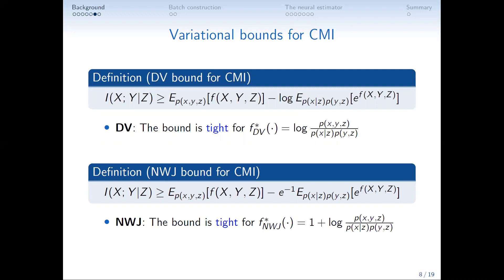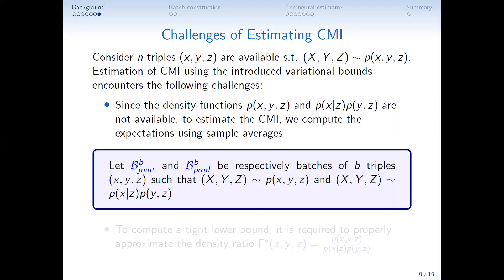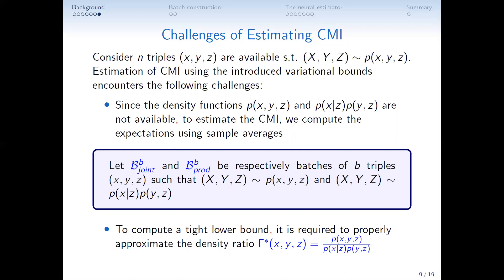There are two main challenges for estimating CMI given N triples (X, Y, Z). First, we need to substitute expectations with empirical sample averages, requiring a batch of joint samples and a batch of product samples created from the respective densities. Second, we need to approximate the density ratio, which we call gamma star, needed for computing the tight-bound F. Both problems are addressed in this work.